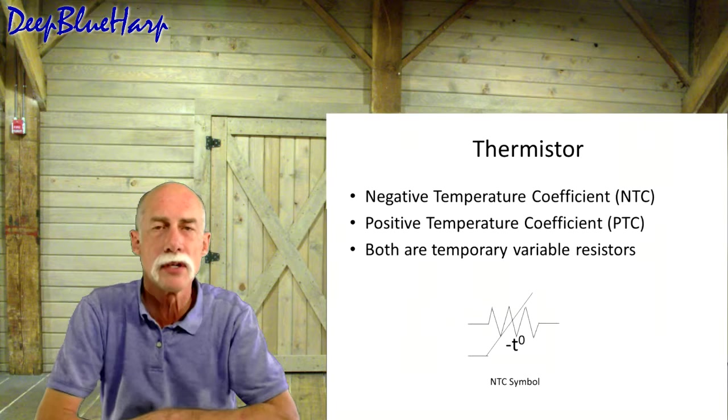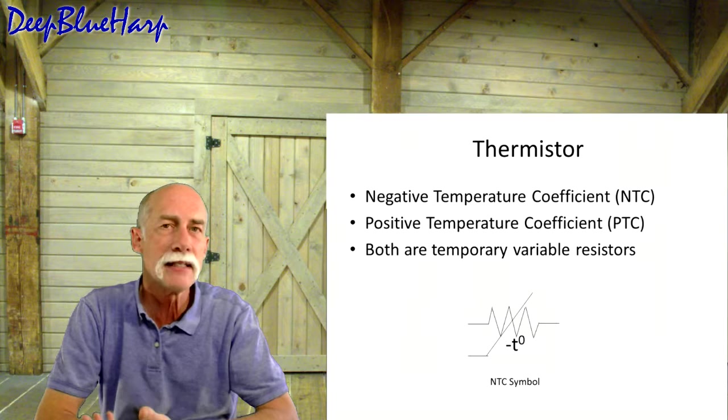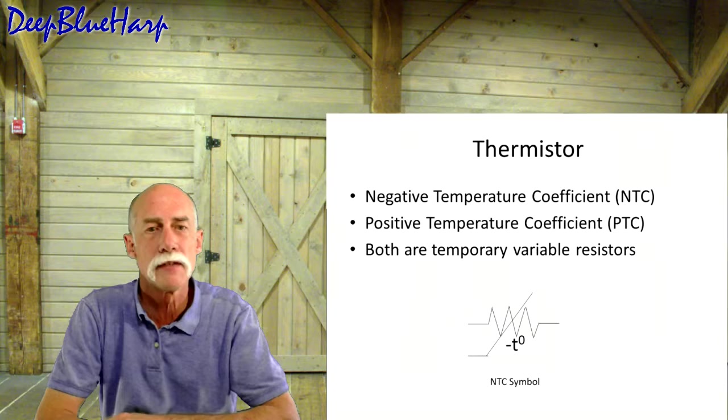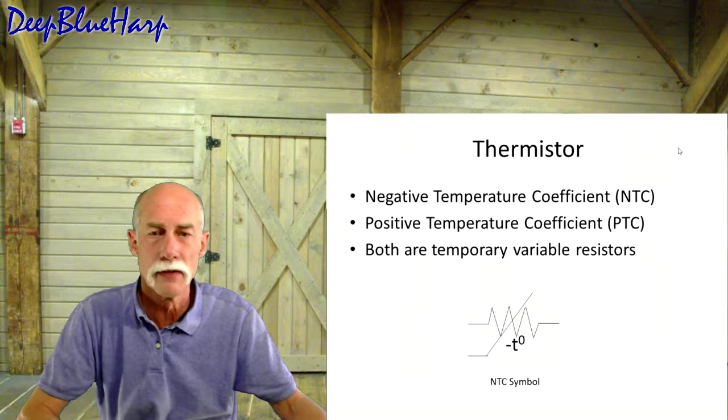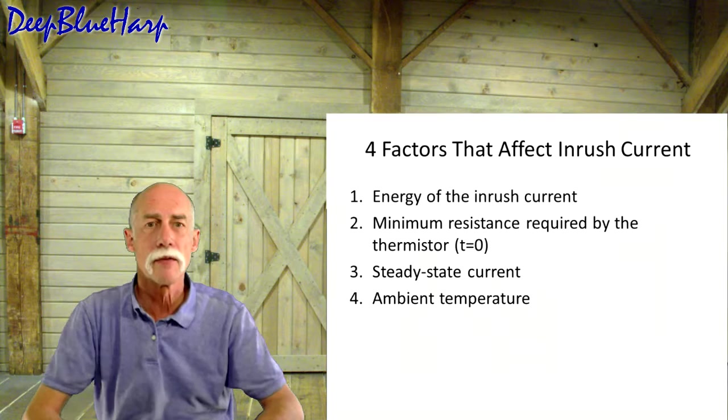The symbol for a thermistor is showing at the bottom. The minus T degrees means it's a NTC or a negative temperature coefficient. As it heats up, the resistance value drops. A PTC, a positive temperature coefficient thermistor, means as it heats up, it has more resistive load. The NTC is the most common in these types of amplifiers and devices.